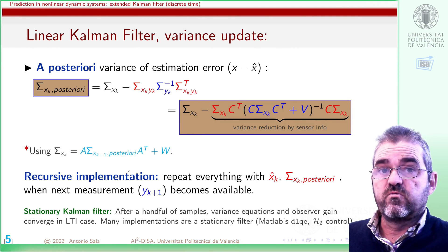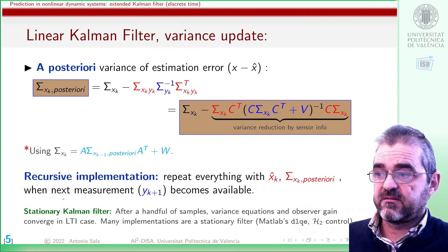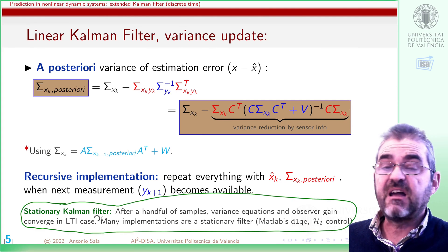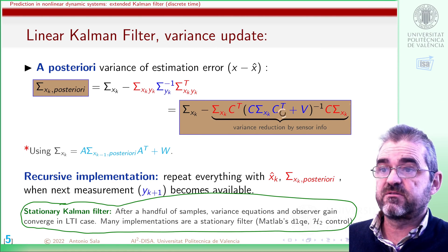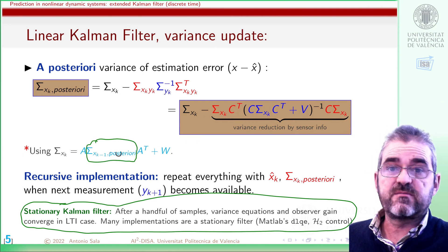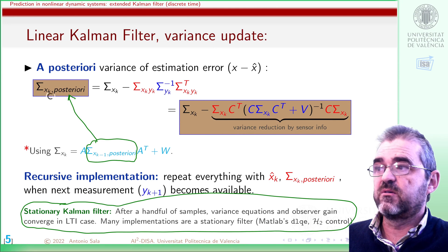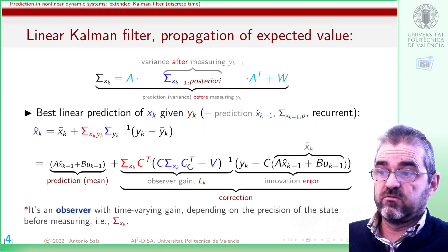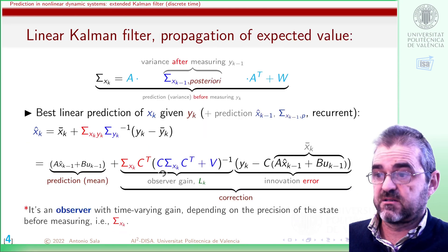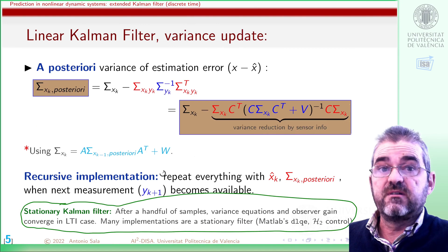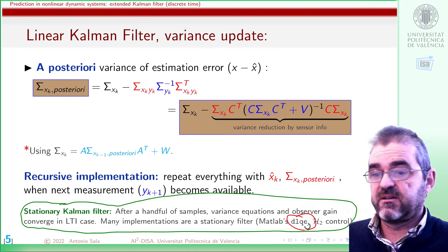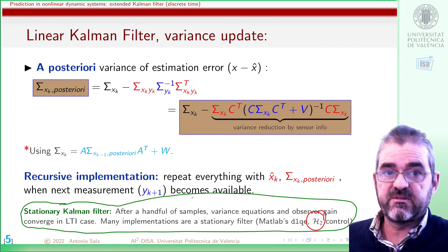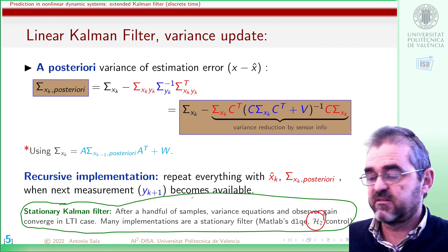It's also widely known that in most cases, after a handful of samples, the variance equation converges and this matrix ends up being equal to this one, and also the observer gain will be constant. So in most linear implementations — the MATLAB DLQE, or what's called H2 control — which implements a stationary Kalman filtering side.